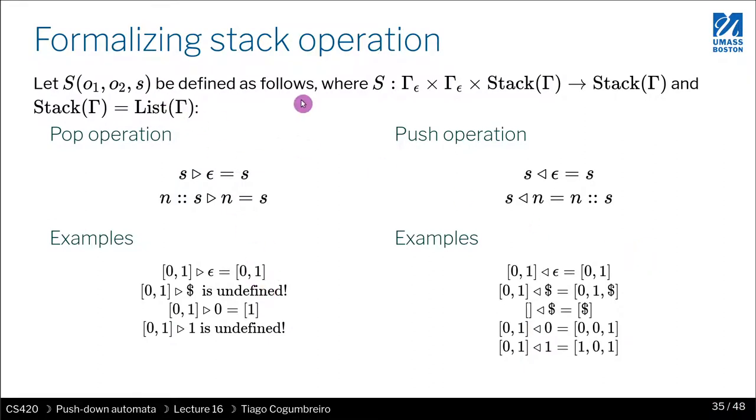So first, we need to formalize stack operations. If I have a stack and I do epsilon, I use this arrow to mean pop and this arrow to mean push, so I'm removing or adding an element. S would be a list where you're adding something to the left. If I have a skip, you don't do anything, so you return the stack as is. You could also define the pop operation where if you have N and you're popping N, these must be the same, then you can safely remove it, which means the pop operation is undefined when these two elements are different or when the stack is empty.